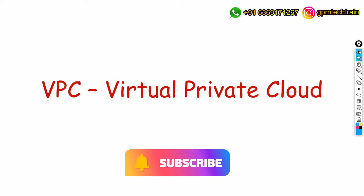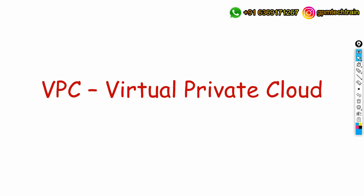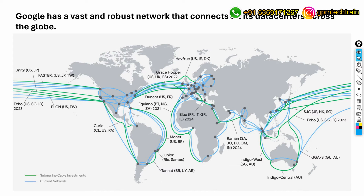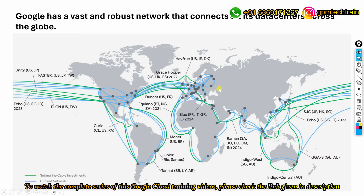In this section, let's understand about a VPC — that is, a virtual private cloud — in detail. In this video, let's understand the overview of VPC. Before getting into VPC, let's have a look at Google's physical network. As of today, this is how Google's physical network is built. They have their data centers across the globe, and this is how they have interconnected them, gradually extending their network.